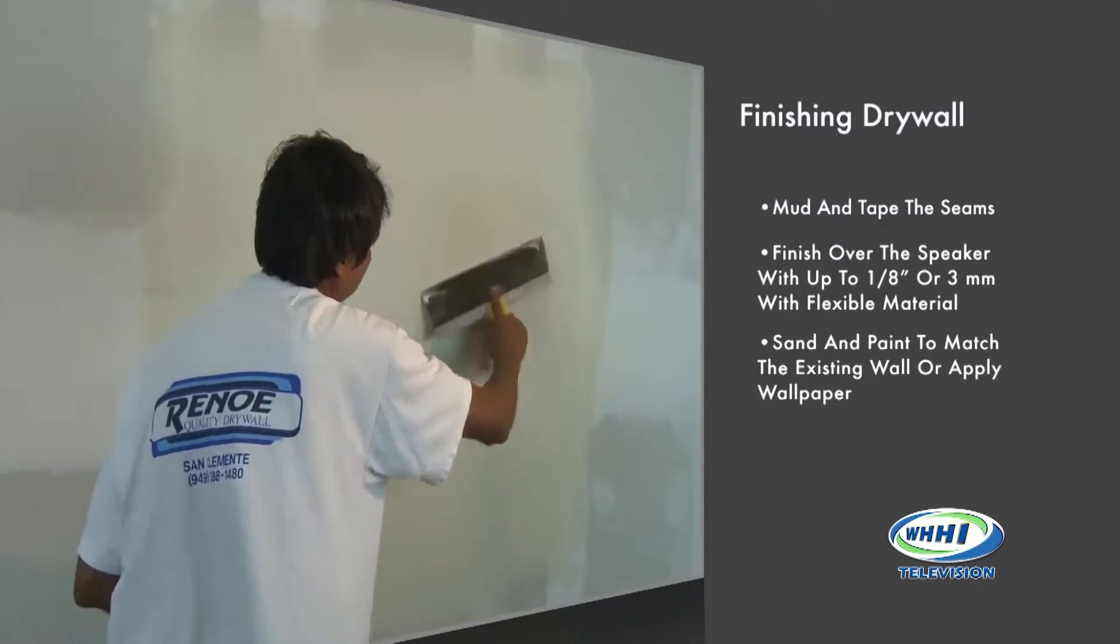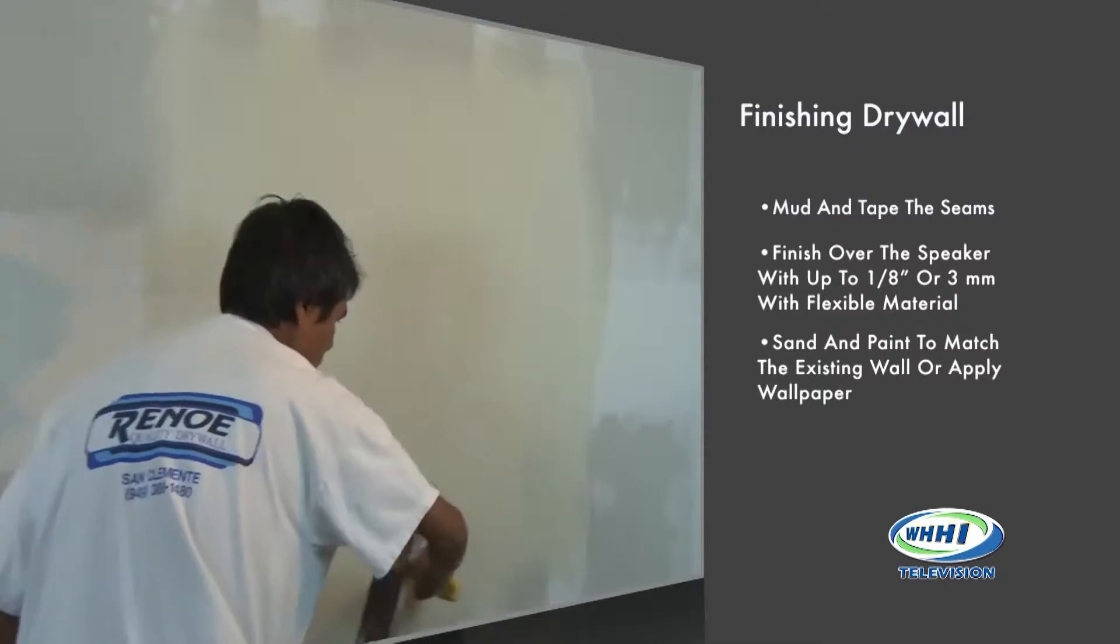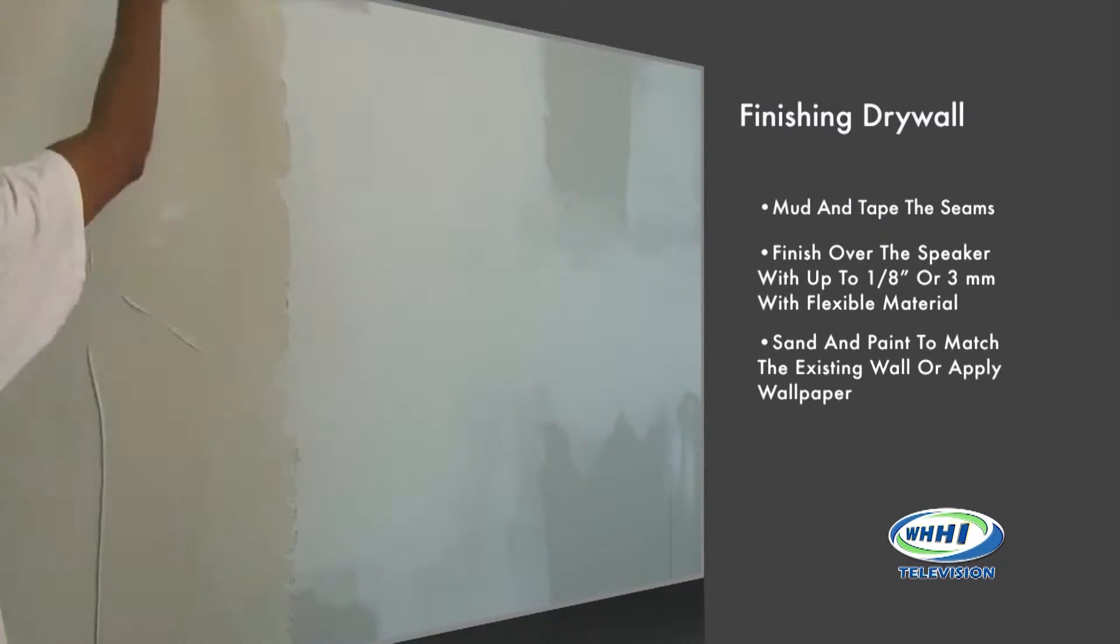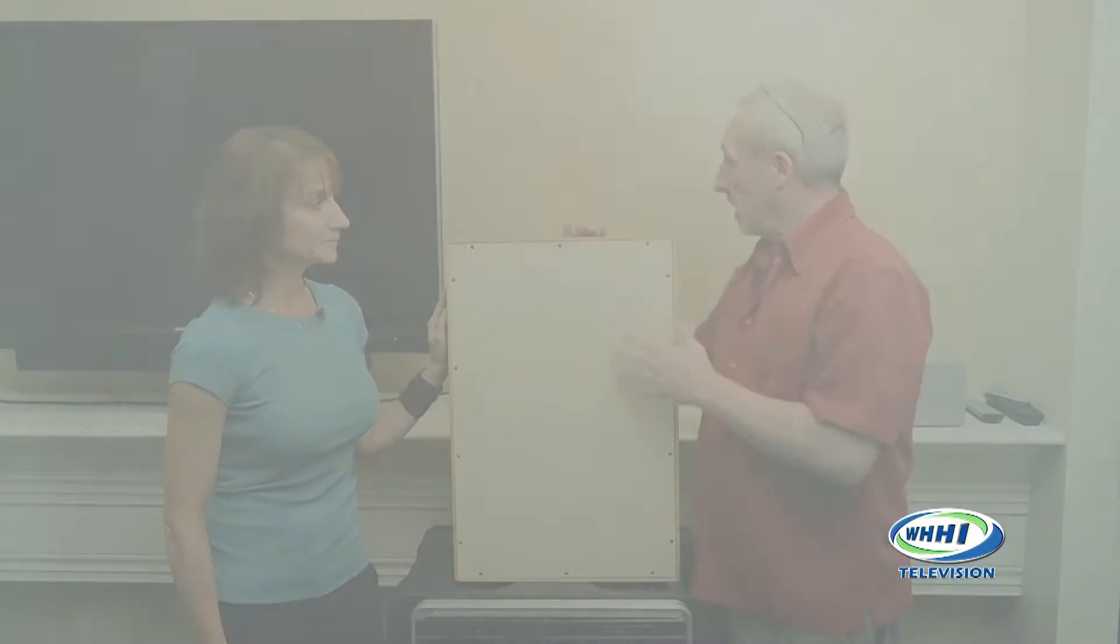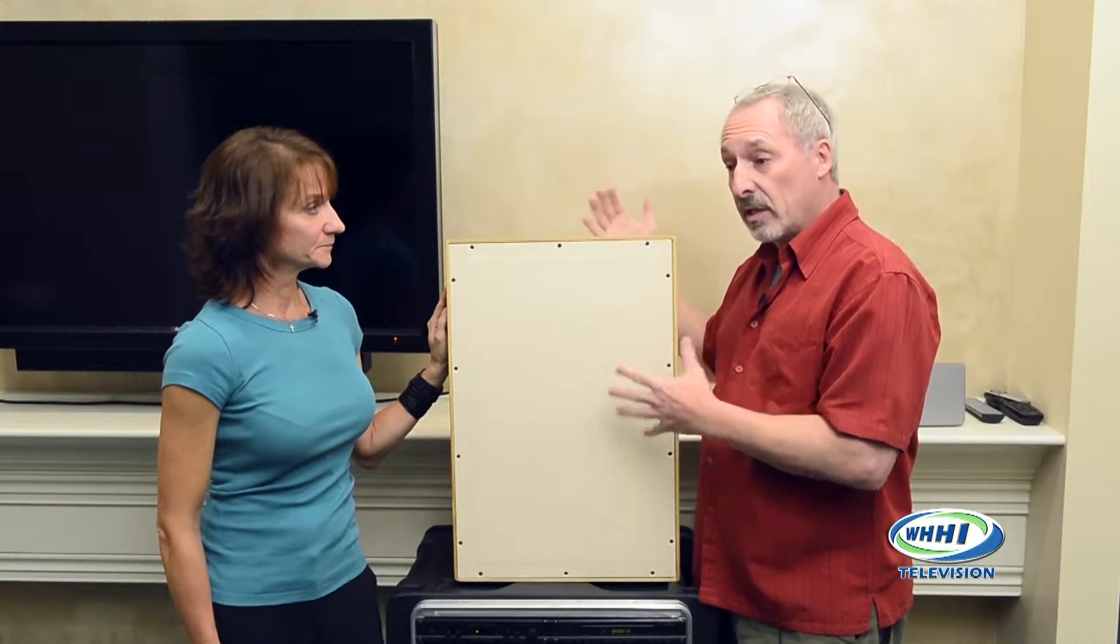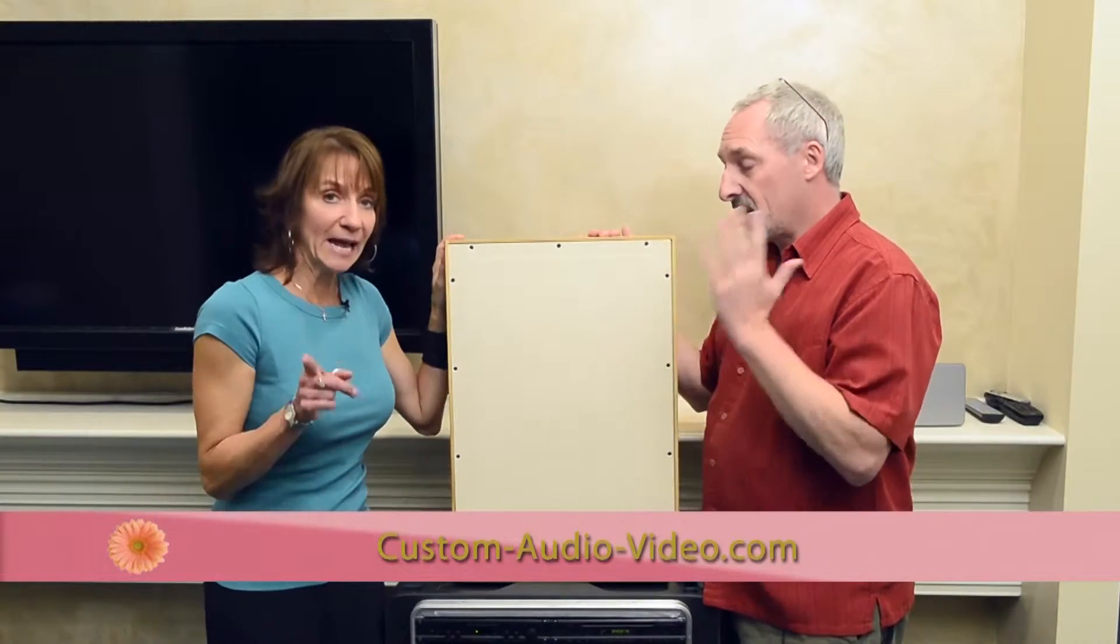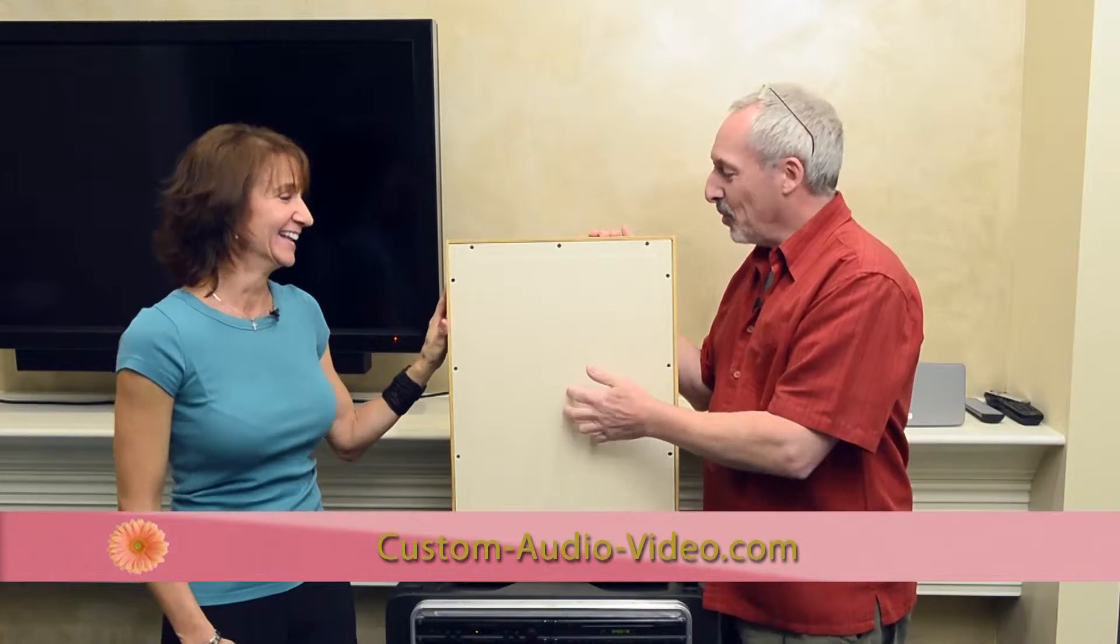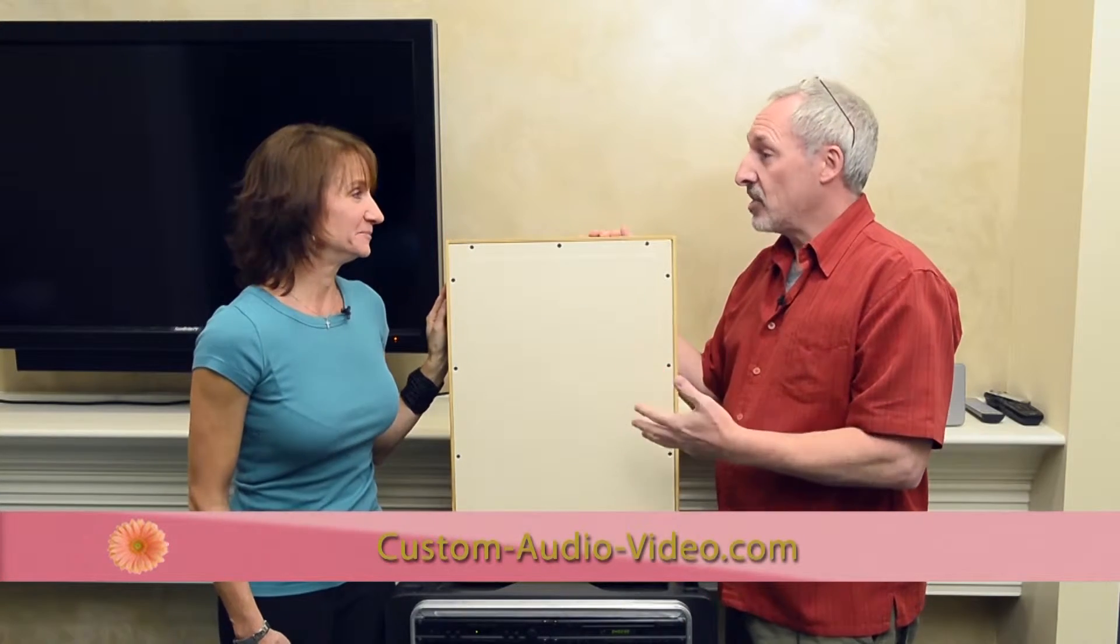And afterwards it just looks like finished drywall. It could be painted, it could be wallpapered over, and on our wall here we have full paint. It could be painted that way too. You don't want to hang pictures on it though. Don't hang pictures on it, no, don't put a nail through this.